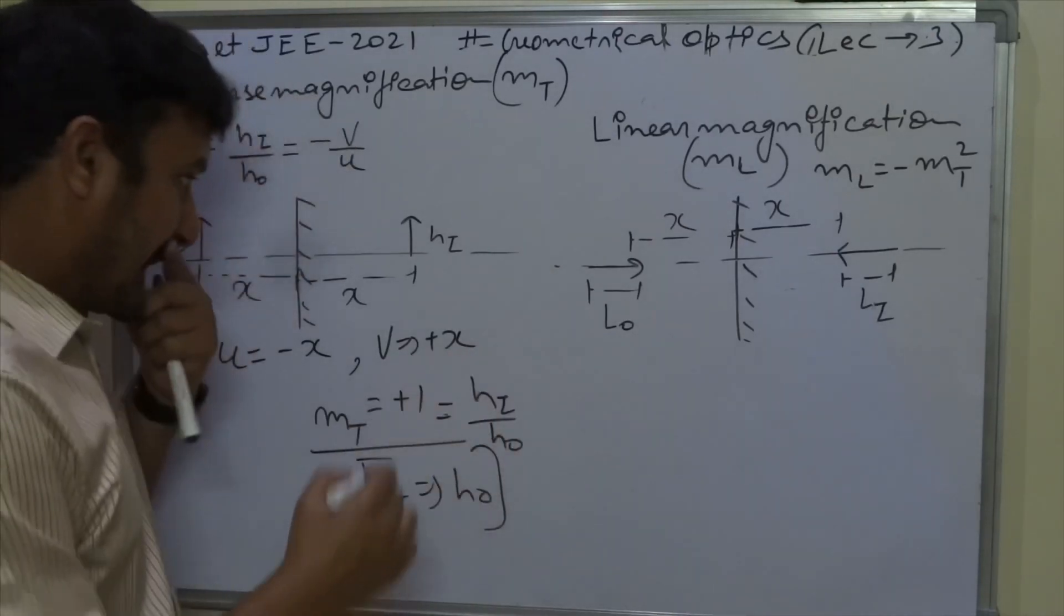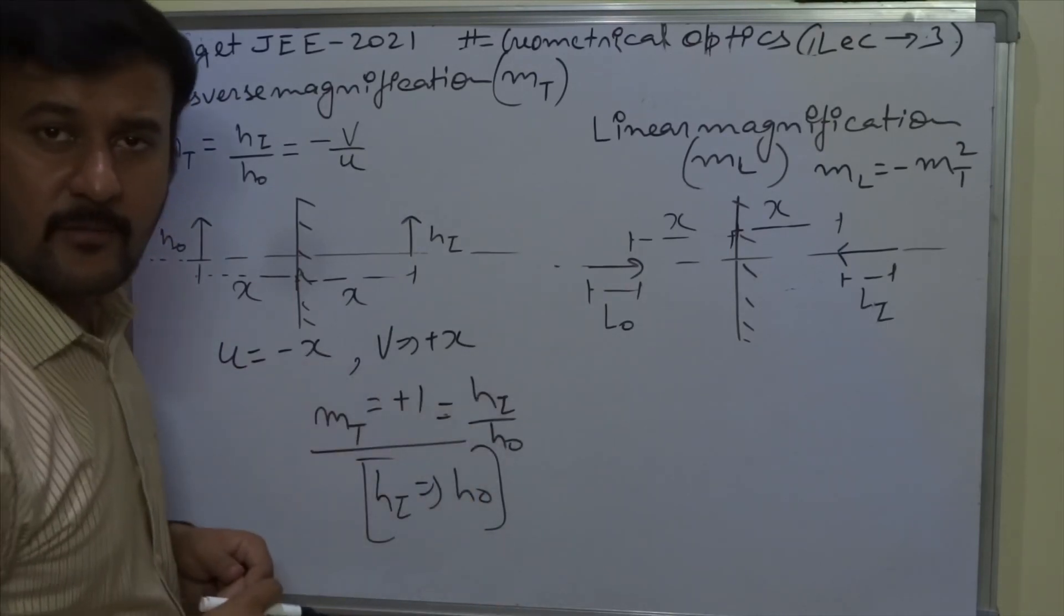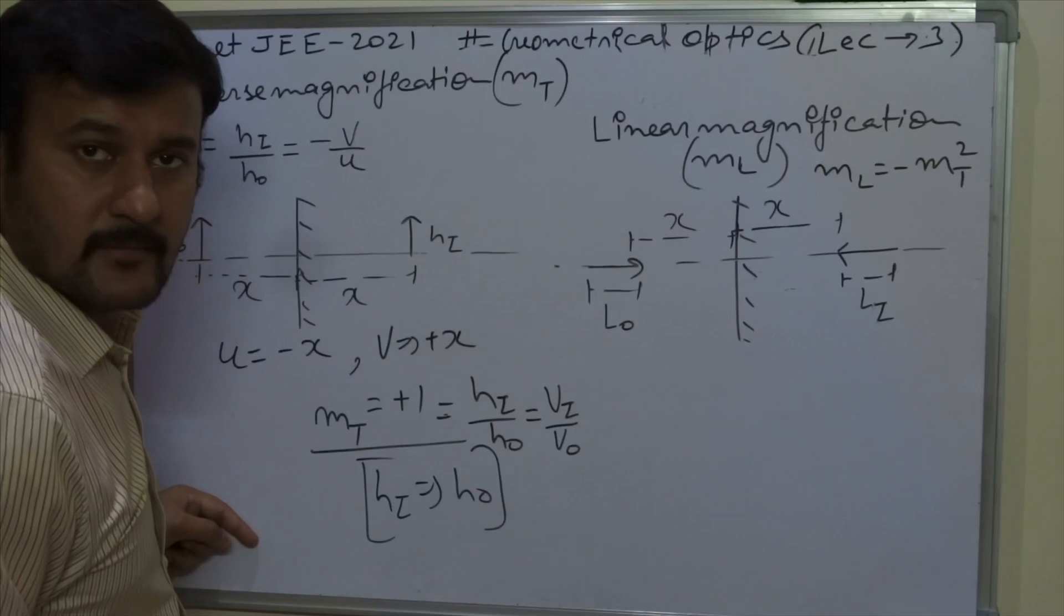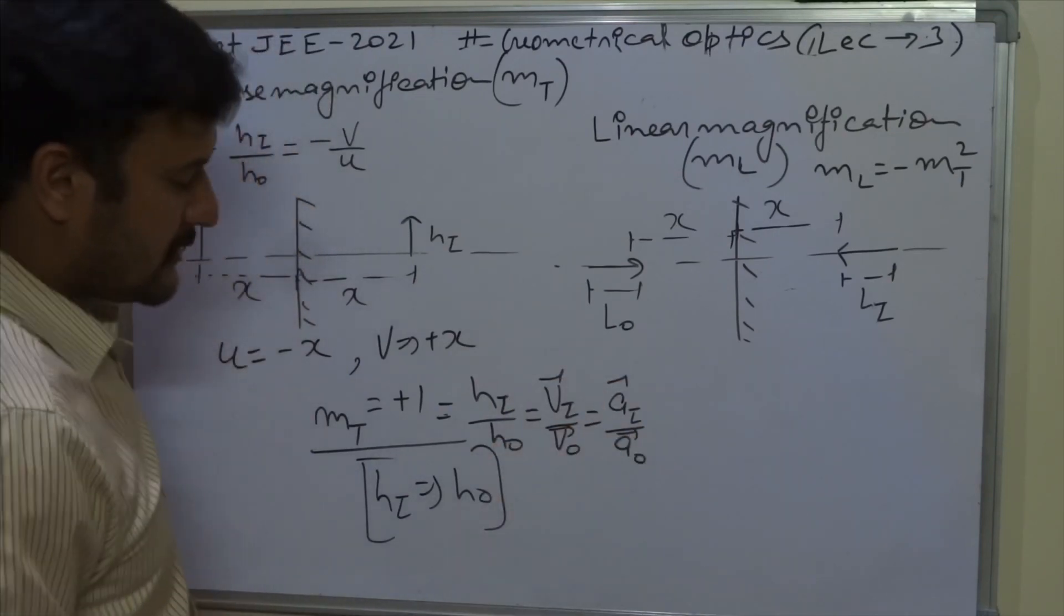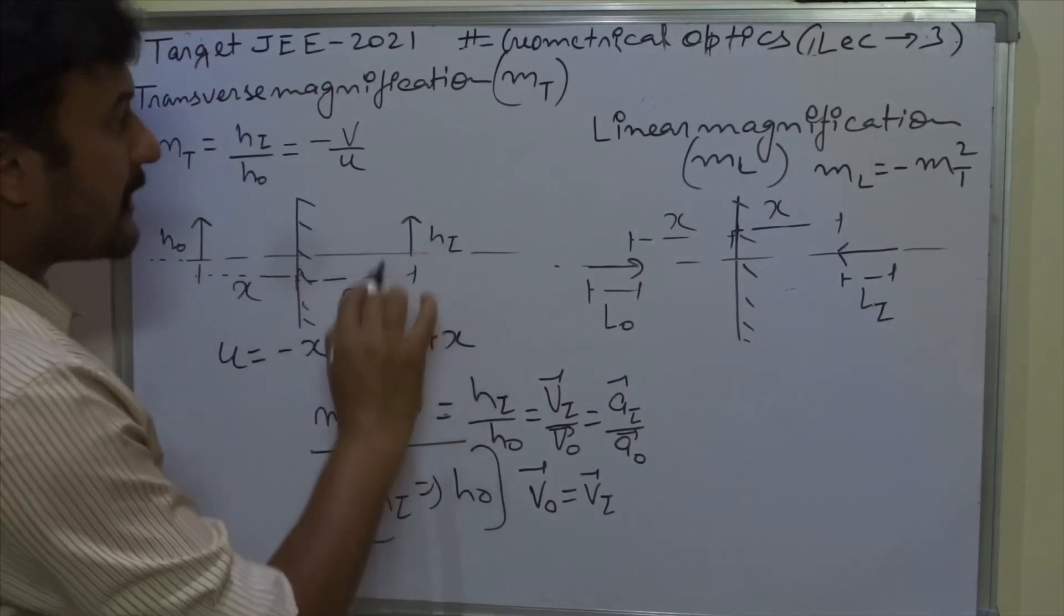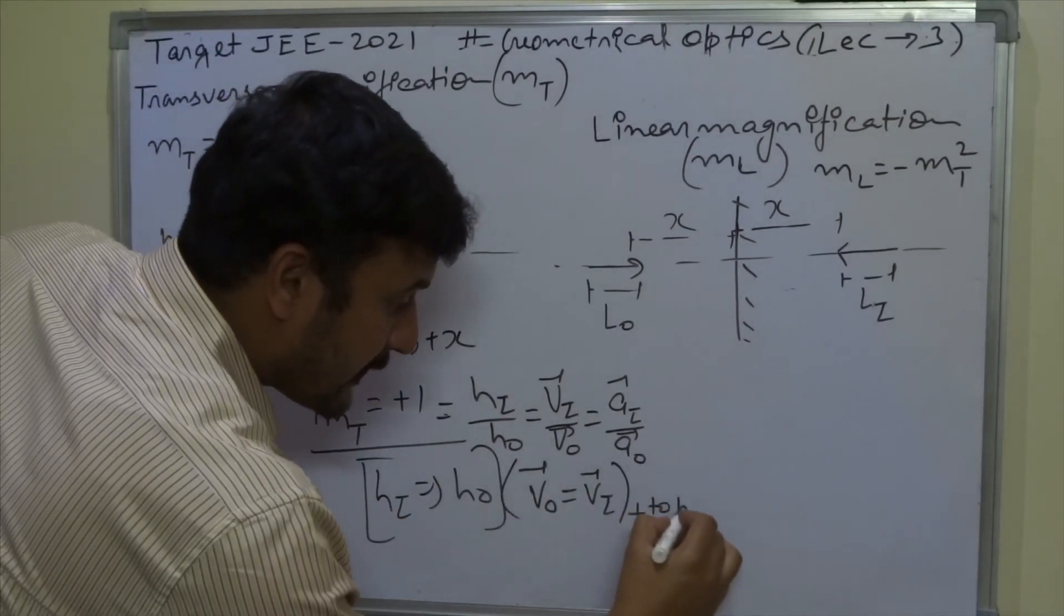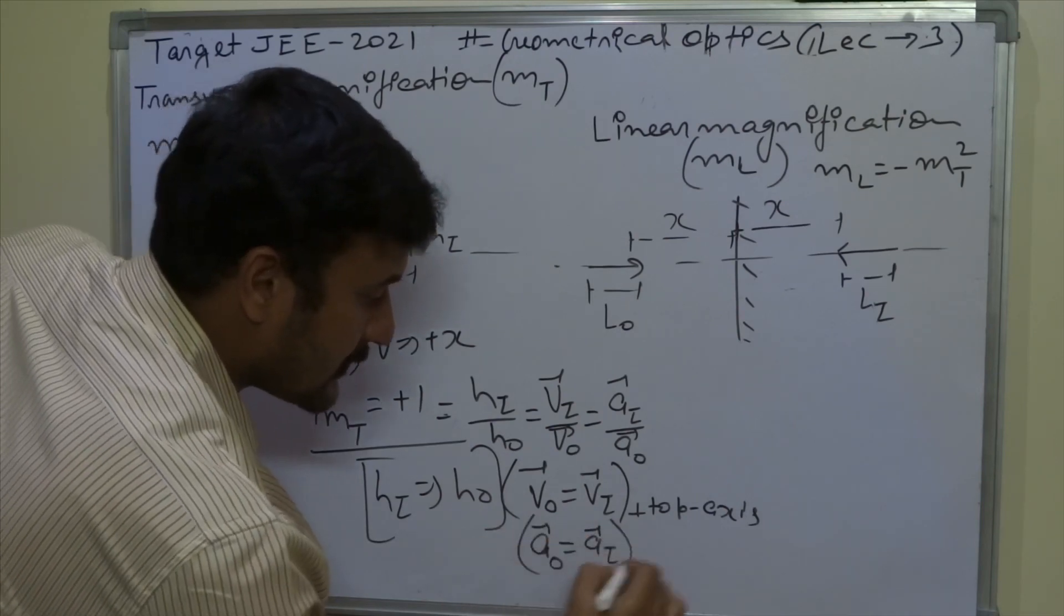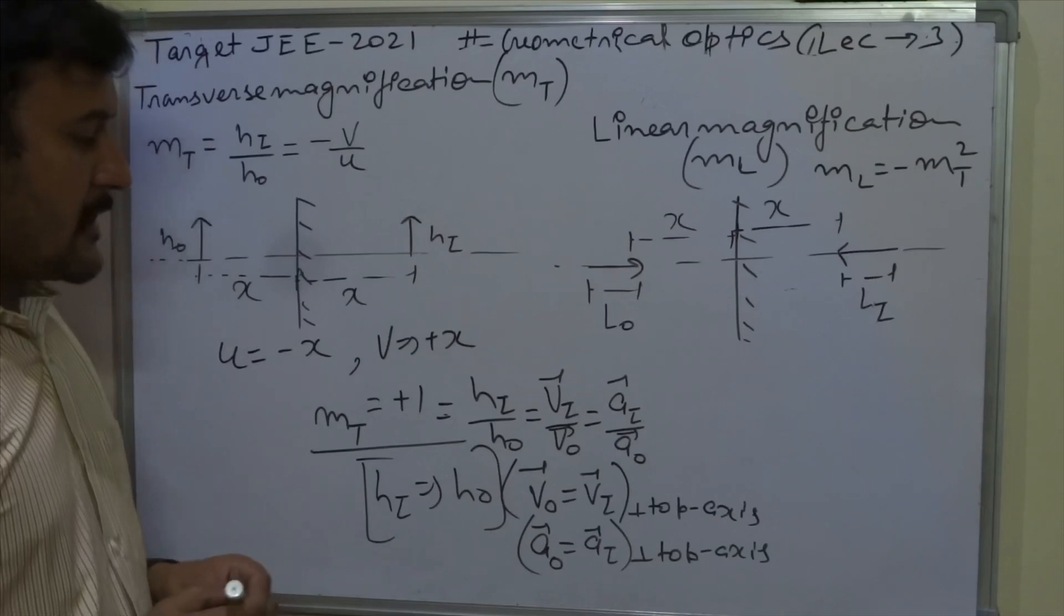If you differentiate it, h_i variable, then h_i variable, differentiate it with time in respect to velocity. And then time in respect. So this is the conclusion that the velocity of object is also equal to velocity of image, which is perpendicular to principle axis. This is important. Perpendicular to p-axis. Acceleration of object is also equal to acceleration of image, perpendicular to p-axis. This is important.